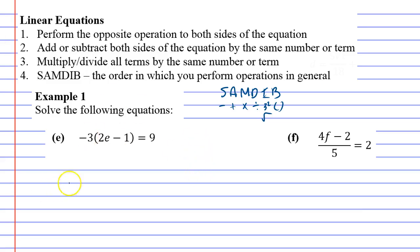First of all, you'll notice there's something inside of brackets. If you look at SAMDIB, brackets actually have to be done last, so we're going to ignore the minus one and the times two for now because they're inside the brackets. What we will focus on is the negative three. This is negative three times whatever's in the brackets, and we need to do this first because brackets need to be done last. So we're going to divide by negative three, which completely cancels out the negative three, and we're going to do it to the nine as well.